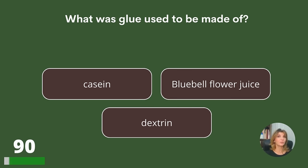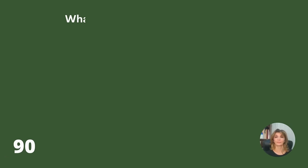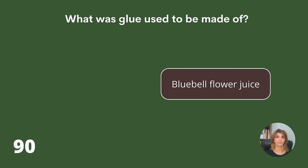What was glue used to be made of? Casein, bluebell flower juice, or dextrin? Answer: Bluebell flower juice.